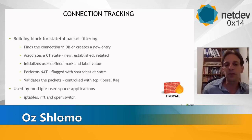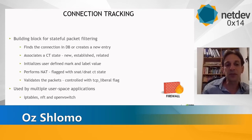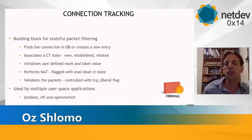TCP window validation can be controlled with the TCP-liberal flag. Connection tracking is a building block used by multiple user space applications such as IP tables, NFT, and OpenVSwitch, to provide users with the ability to configure stateful packet filtering.